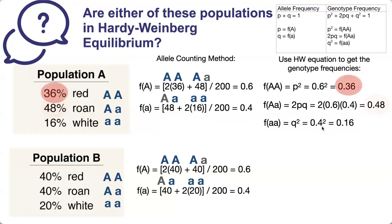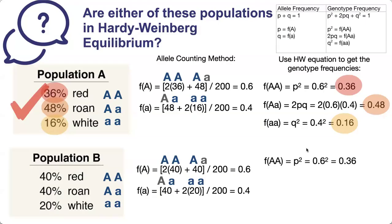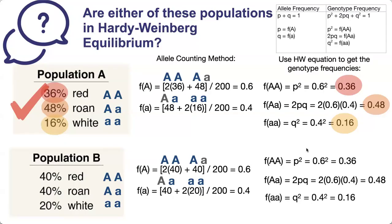We can see right away that the genotypes predicted by using the Hardy-Weinberg equation equal the genotypes in the original population. Now for population B: frequency of big A big A is p squared, which is 0.36; frequency of big A little a is 2pq, giving us 0.48; and frequency of little a little a is q squared, giving us 0.16.